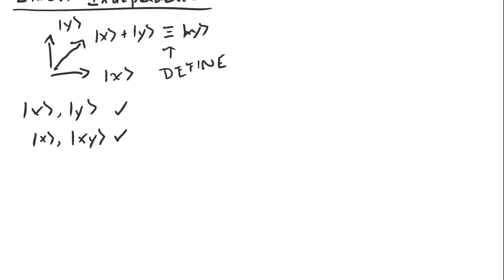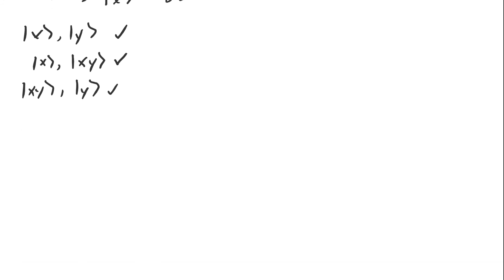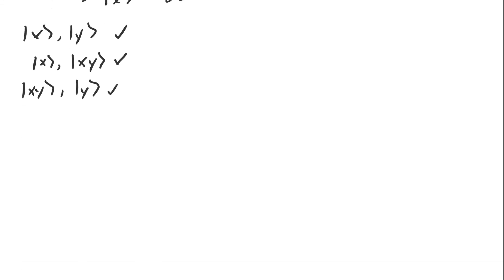If we look at XY and Y, these are also going to be linearly independent because there's no way to scale either one to get the other. So any time we're dealing with two vectors and we want to know whether or not they're linearly independent, we just need to see if one is a scalar multiple of the other.